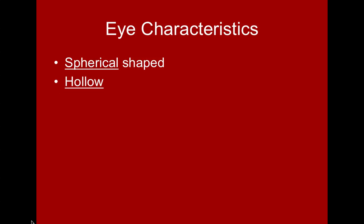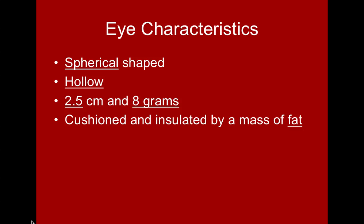Moving on to the eye itself, let's look at some general characteristics. The eye is round and hollow, about two and a half centimeters in diameter with a mass of about eight grams. This tissue is very delicate, which is why it's protected on most sides by bone. It is also surrounded, cushioned, and insulated by a mass of fat — a pad of fat it sits on to provide cushioning inside the skull.